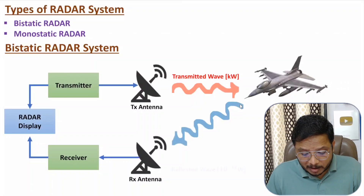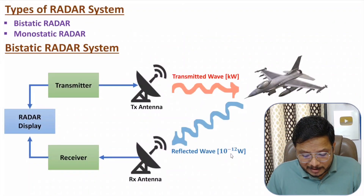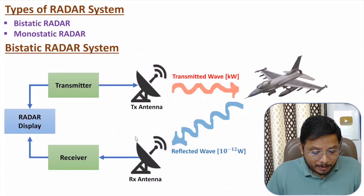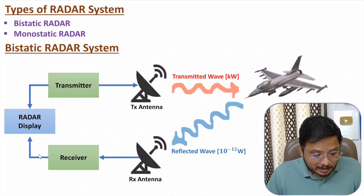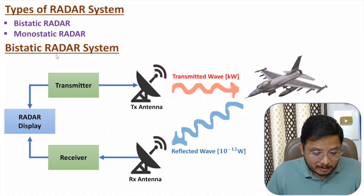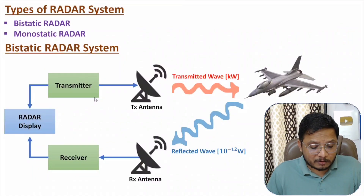When an object is in the vicinity, it will reflect this signal, but the reflected wave will be very weak — in terms of 10 to the power minus 12 to 10 to the power minus 15 watts. By comparing the transmitter signal and receiver signal on the radar display, we will be tracking unknown objects. With the bistatic radar system we have two separate antennas: one with the transmitter and one with the receiver.